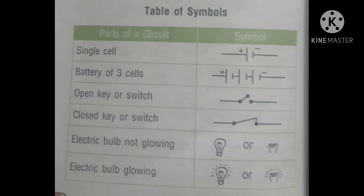A battery of three cells means three big lines and three small lines arranged alternately, so the positive terminal of one cell is connected to the negative terminal of the other cell. An open key or switch is represented by its symbol; when we close it, it becomes a closed key or switch and is in the on position. An electric bulb not glowing and an electric bulb glowing each have their own symbols — you can draw either one of the two.